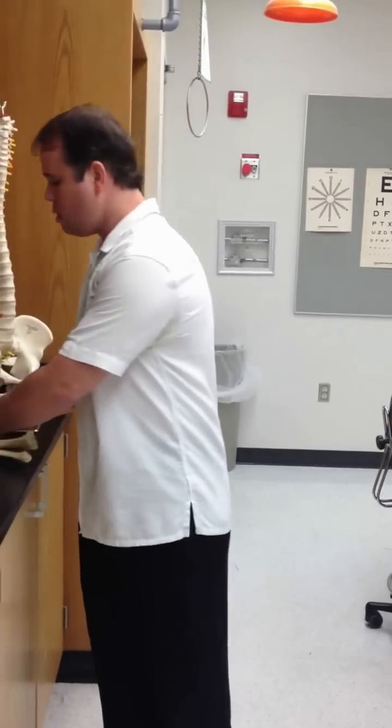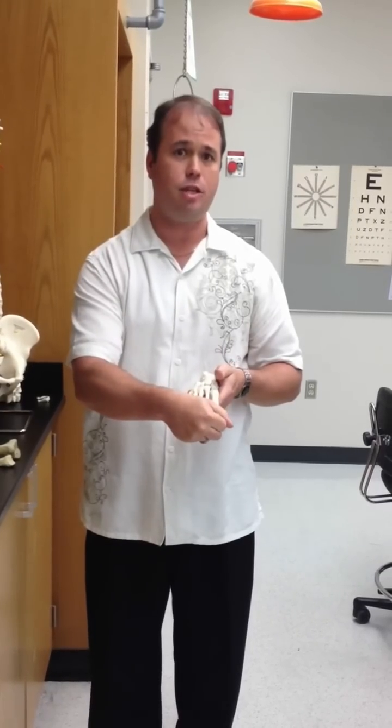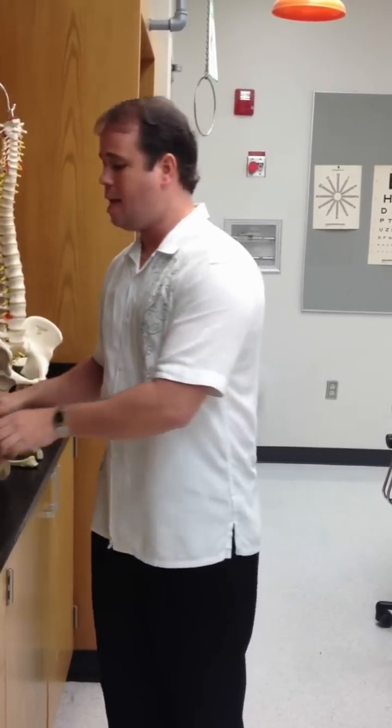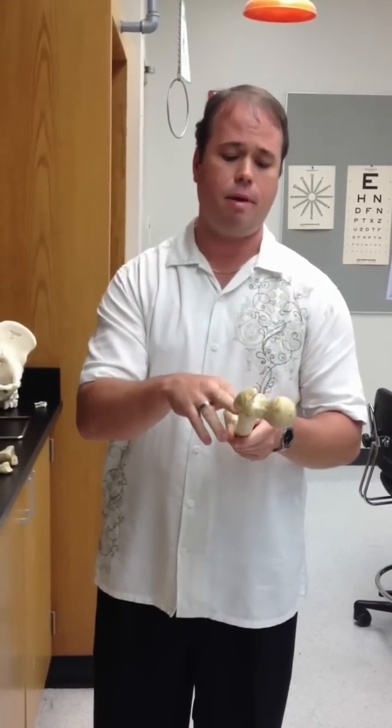From there, we have the ankle bones. We have tarsals, metatarsals, and phalanges or phalanx. There are seven of these, and he wants you to know that the heel is the calcaneus, and where the tibia articulates, this is going to be the talus. The lining of the outside of bone is going to be called the periosteum. Inside, we have the medullary canal containing endosteum. And from there, the cancellous bone, we also have inside the medullary canal red bone marrow and yellow bone marrow.